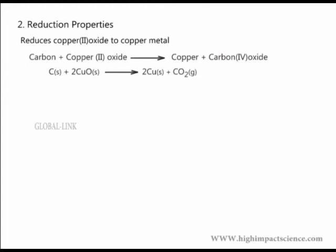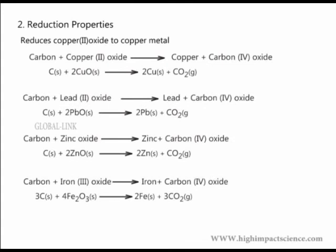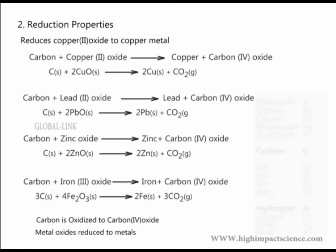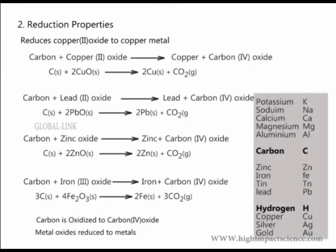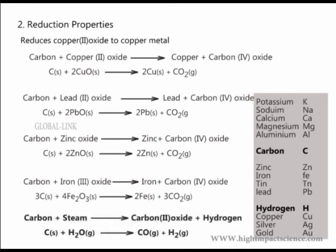Similarly, carbon removes combined oxygen from zinc oxide, lead(II) oxide, and iron(III) oxide. Carbon has the ability to remove combined oxygen from other metals. In these reactions, carbon is oxidized to carbon dioxide and the metal oxides are reduced to metals. In terms of competition for combined oxygen, carbon can be placed in the reactivity series of metals between aluminum and zinc. Thus, it reduces the oxides of all metals below it in the reactivity series. Therefore, carbon is a reducing agent. Oxidation is the addition of oxygen to a substance, while reduction is the removal of oxygen from a substance. The reducing property of carbon is used in the extraction of metals from their oxides. At temperatures above 1,200 degrees Celsius, carbon reduces steam to hydrogen gas. Carbon in turn is oxidized to carbon monoxide. A mixture of the two gases is called water gas.